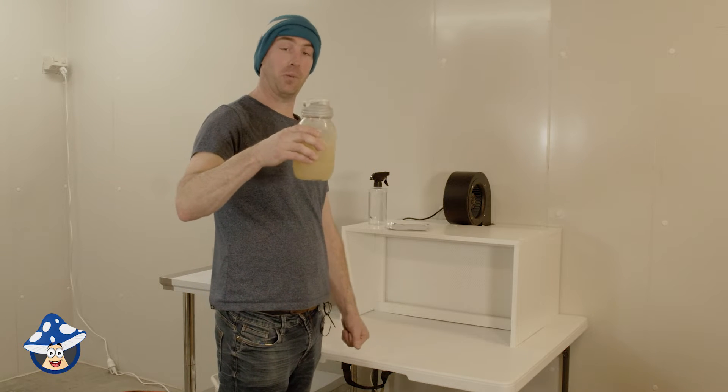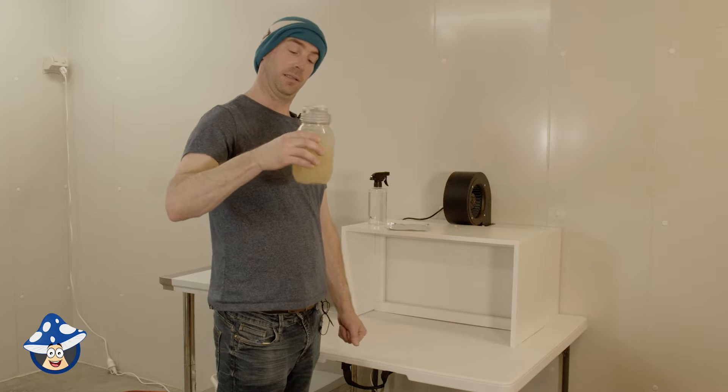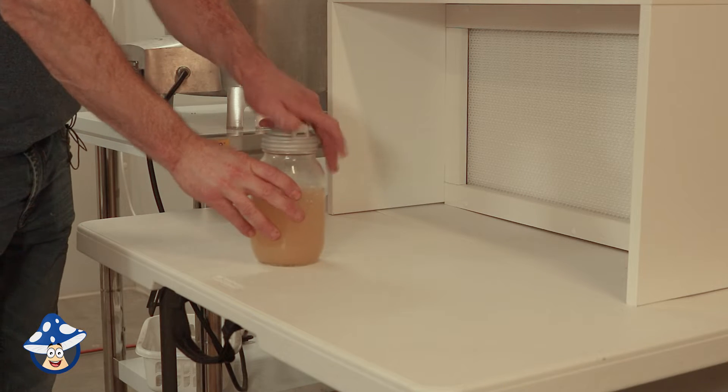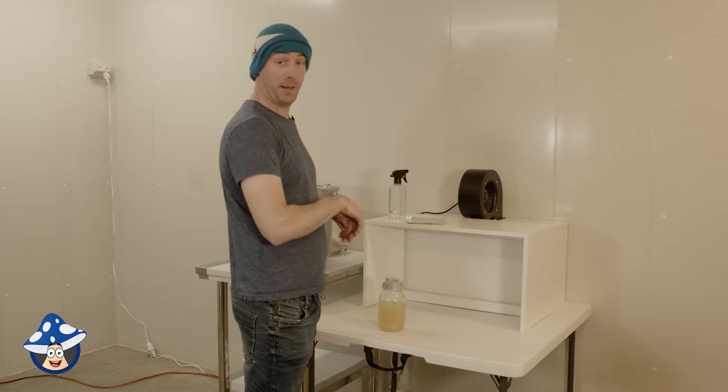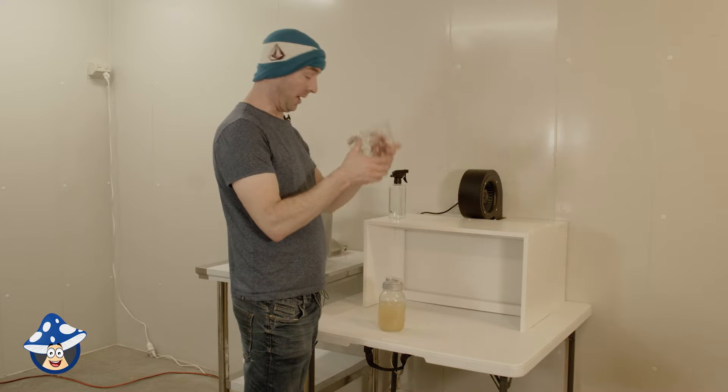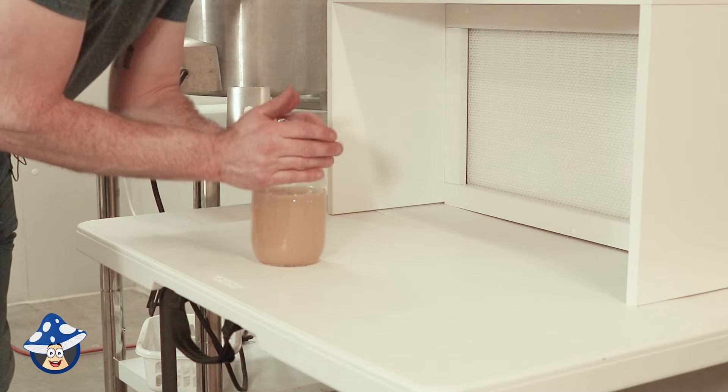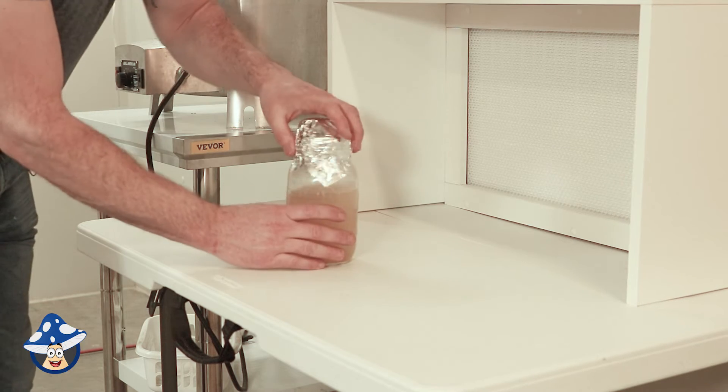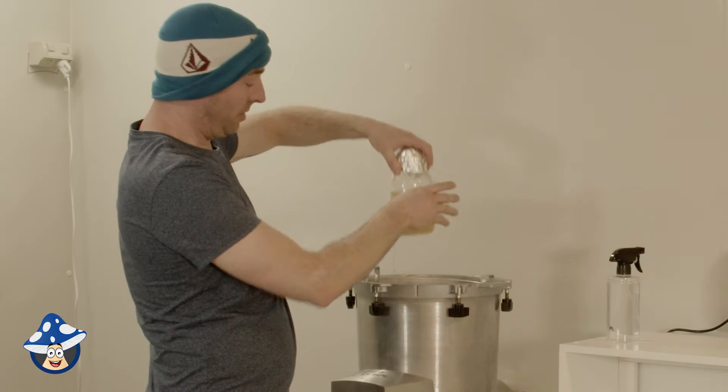And give it a good mix. You can use a spoon, knife, fork, whatever. Make sure you mix it up really good. And then loosen the lid, because when you're sterilizing, the steam is going to get in there. And then we'll cover it with some foil. Make sure it's loose. And in the sterilizer, it's going to go.